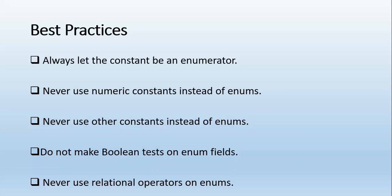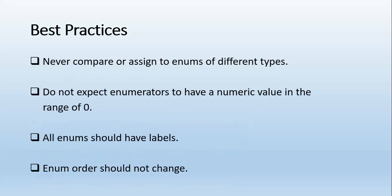These are a few best practices: Always let the constant be an enumerator. Never use numeric constants instead of enums. Never use other constants instead of enums. Do not make boolean tests on enum fields. Never use relational operators on enums. Never compare or assign to enums of different types.